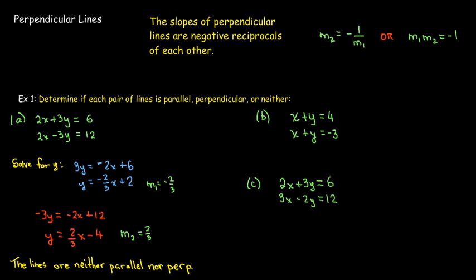What about our second pair? It's a lot easier to solve for y in these cases, because y is already just multiplied by 1. So, in the first case, I get y equals negative x plus 4. So, my slope is negative 1. In the second line, I get y equals negative x minus 3. So, the slope is also negative 1. The slopes are equal to each other. So, the conclusion is that these lines are parallel.